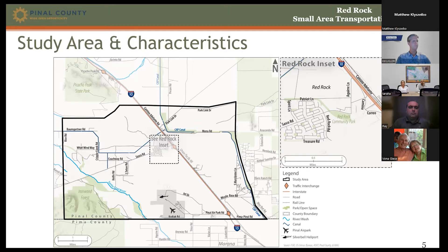Notable features include the Red Rock community itself, the master plan community, the Union Pacific Railroad, Pinal Air Park, Silver Bell Heliport, and the DAP Canal. Natural features include the Santa Cruz River and adjacent riparian areas, and the Ironwood National Monument Forest in the southwest corner. The community is going to grow — there's already an approved master plan to expand into three more villages.